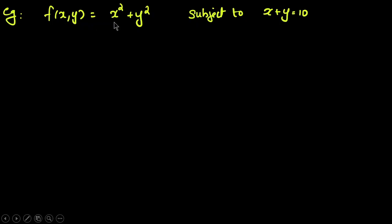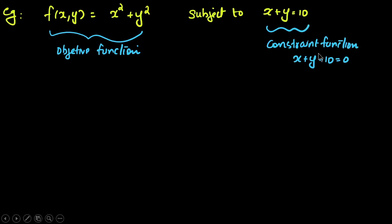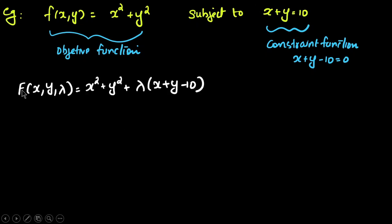Let's take an example. Suppose f of x, y equals x squared plus y squared. This is the function we want to minimize, subject to x plus y equals 10 — that is the constraint. We call f(x,y) the objective function — the function which we want to maximize or minimize. The constraint function is written in equal-to-zero format: x plus y minus 10 equals 0.